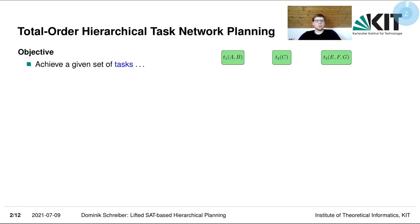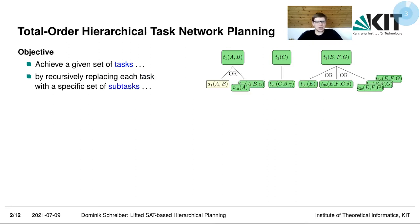We are dealing with totally ordered hierarchical task network planning, which is a subform of hierarchical planning. The objective is to achieve a given set of tasks — here we have three tasks in a symbolic notation with parameters — by recursively replacing each of the tasks with a specific set of subtasks. For each task, we may have one or several alternatives of how we can replace a task with subtasks.